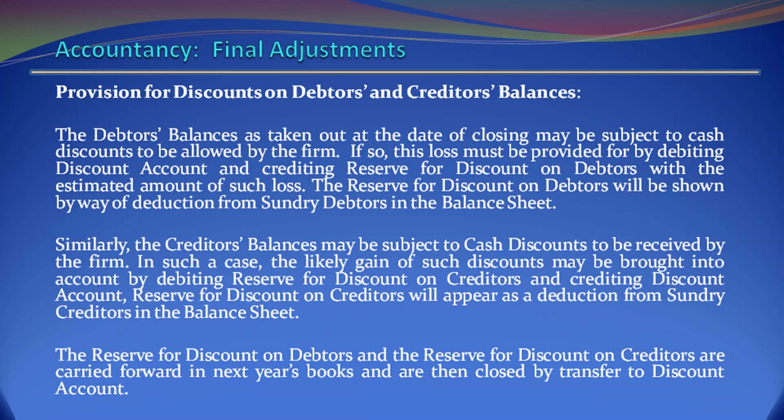Provision for Discounts on Debtors and Creditors Balances. The debtors' balances as taken out at the date of closing may be subject to cash discounts to be allowed by the firm. If so, this loss must be provided for by debiting discount account and crediting reserve for discount on debtors with the estimated amount of such loss. The reserve for discount on debtors will be shown by way of deduction from sundry debtors in the balance sheet. Similarly, the creditors' balances may be subject to cash discounts to be received by the firm. In such a case, the likely gain of such discounts may be brought into account by debiting reserve for discount on creditors. Reserve for discount on creditors will appear as a deduction from sundry creditors in the balance sheet.